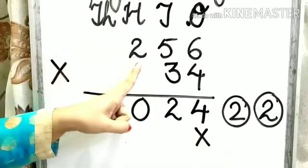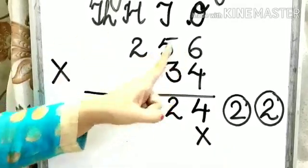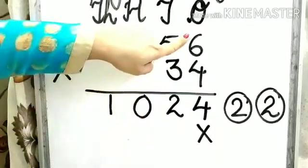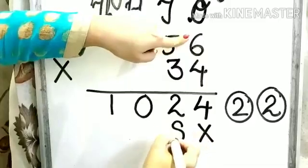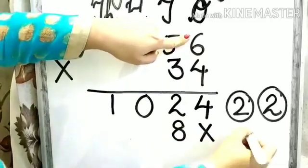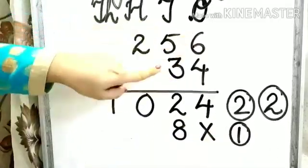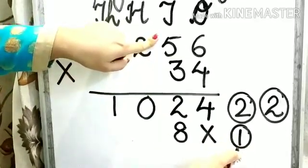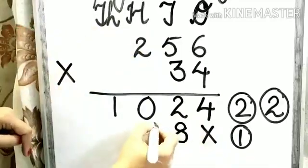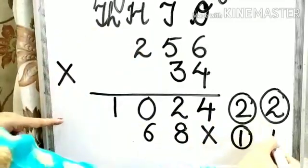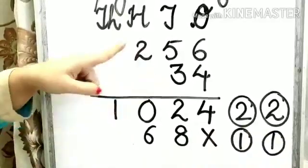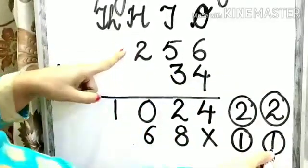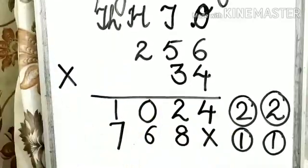Now we have to multiply 256 by 3. Let's start. 3 times 6 is 18, write down 8 here and 1 will be carry. 3 times 5 is 15, 15 plus 1 is 16, so write down 6 here and again 1 will be carry. 3 times 2 is 6, 6 plus 1 is 7, so write down 7 here.